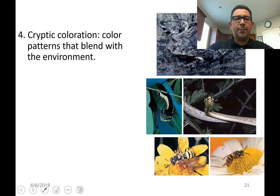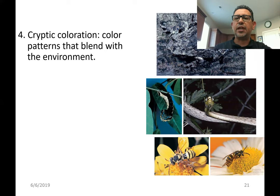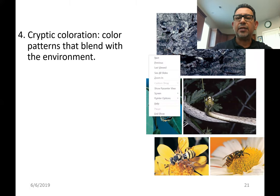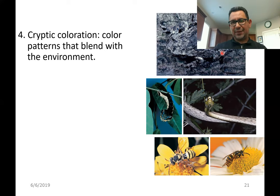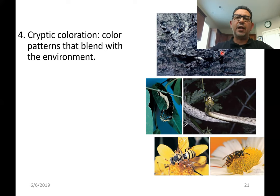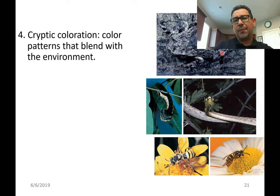Another strategy is cryptic coloration. You can see in this illustration a frog that has nicely blended with the bark of a tree. Following the laser pointer, this is the head region, this is where the eyes are located, this is the front leg, and the hind leg is tucked underneath the abdomen. Some people call this camouflage, but I don't like to use that term because camouflage usually implies a dull and plain coloration, which happens to be the case of this tree frog.